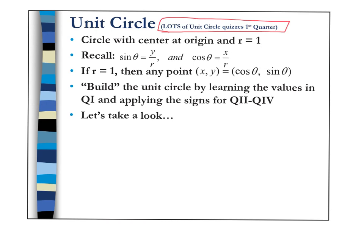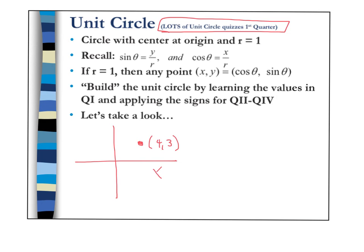You really want to spend time committing this lesson to memory. First of all, if we think about any point on our circle, let's say I had an ordered pair right here, and this point was equal to (4, 3). If we look at those x, y, r values, we would say that x is 4, y is 3, and r is 5.